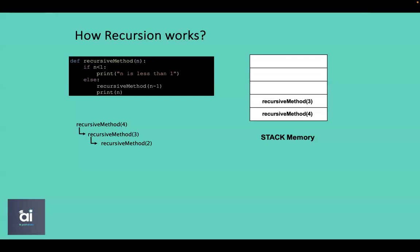When running the recursive function with parameter 2, the system checks the if condition. Since 2 is greater than 1, the else statement is executed, calling the recursive method with parameter 1. The recursive method with parameter 2 is then stored in stack memory.